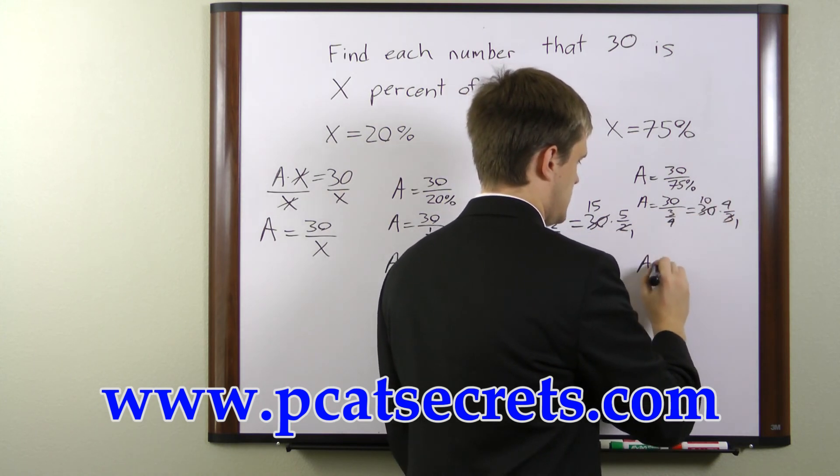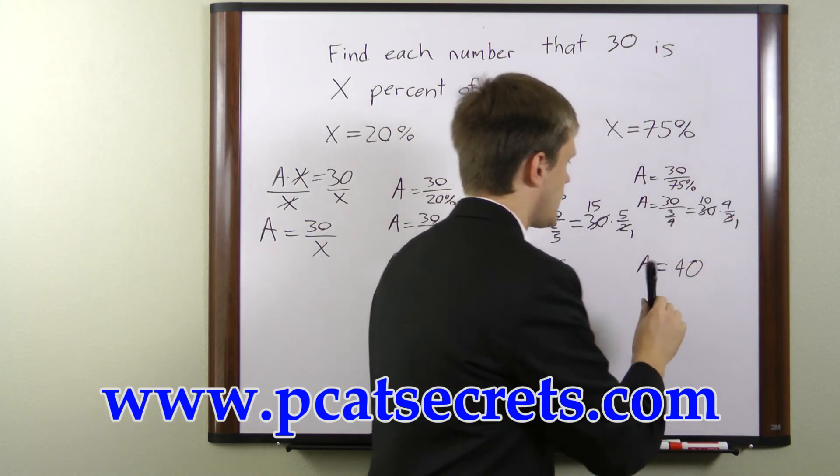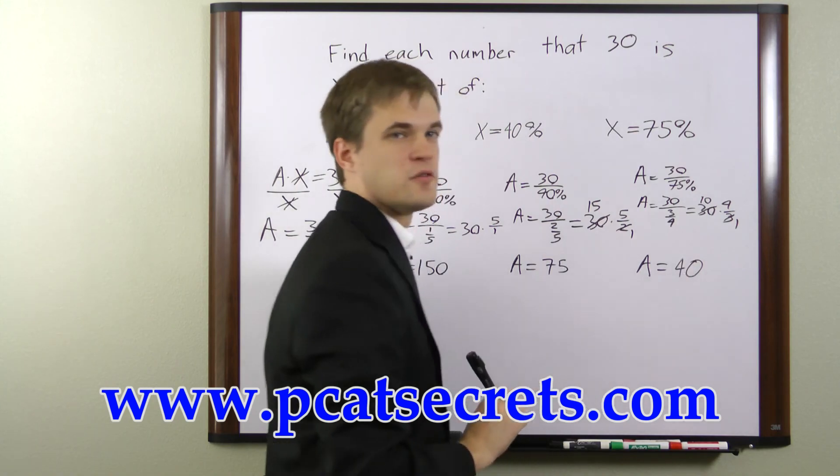So all we're left with here is 10 times 4, which is 40. So 30 is 75 percent of 40.